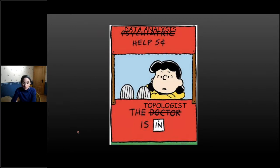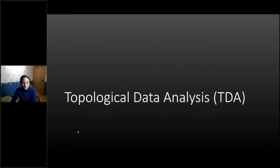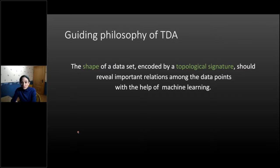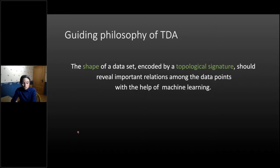Topological data analysis — usually abbreviated as TDA — has a guiding philosophy that if you have a large enough data set, one important thing to think about is its shape. You can learn things about how to interpret the data and extract interesting structure by looking at its shape and encoding that shape in what people call a topological signature. This can be just a number, a polynomial, a matrix — small descriptors used to capture some of the shape of the data set. The idea is that you should be able to feed these topological signatures to machine learning in order to discover interesting things about the structure of your data.